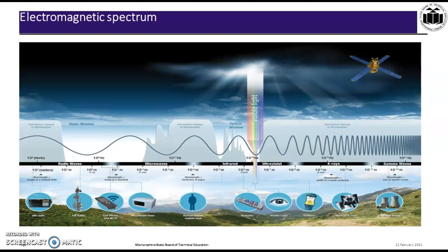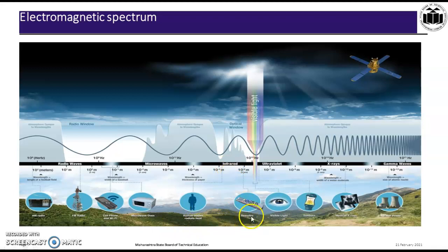The figure shows the electromagnetic spectrum and their applications as per their band. In radio waves, FM radio and cell phones are applications. In microwave, the microwave oven is the application. The human body falls under infrared, where remote controls are used. Then there is ultraviolet, visible light, x-rays used in medical imaging, and gamma rays used in nuclear power. You have already studied the electromagnetic spectrum in physics subjects.